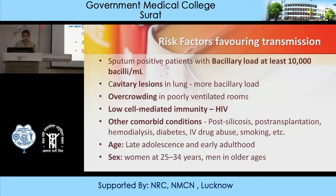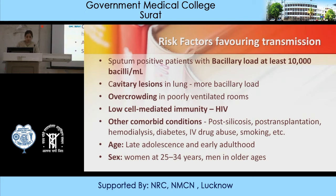Risk factors favoring transmission: sputum smear-positive patients with a bacillary load of at least 10⁴ bacilli per mL cause infections. Adult cavitary lesions in the lung have more bacillary load and transmit infections more efficiently. Overcrowding in poorly ventilated rooms increases risk. Low cell-mediated immunity — for example, HIV — makes patients most susceptible. Other comorbid conditions include post-silicosis, post-transplantation, hemodialysis, diabetes, IV drug abusers, and morphine use. Age-wise, late adolescence and early adulthood are at risk; in women, 25–34 years, and in men, older age groups are commonly affected.